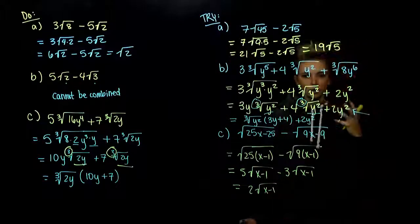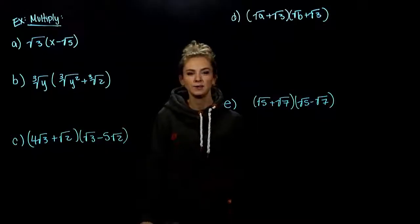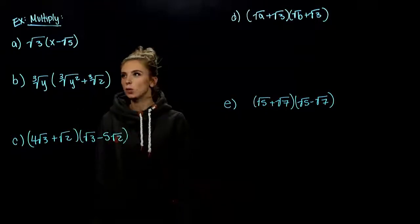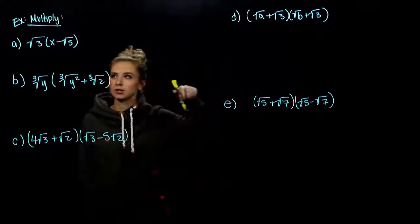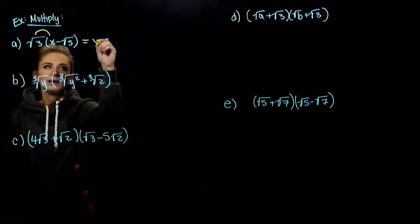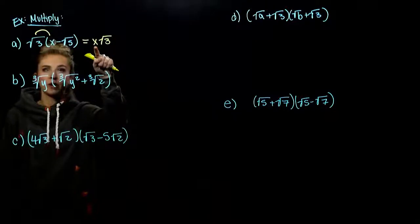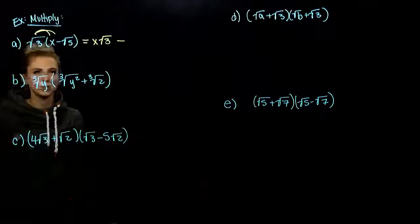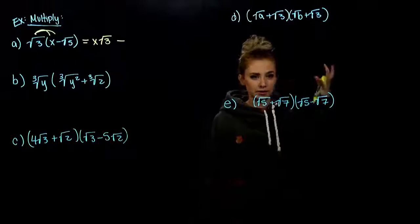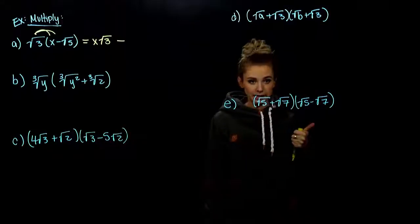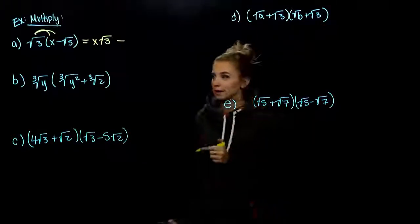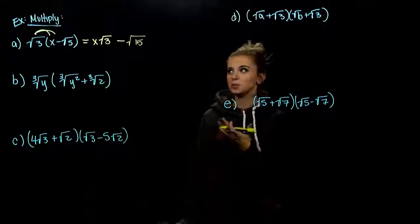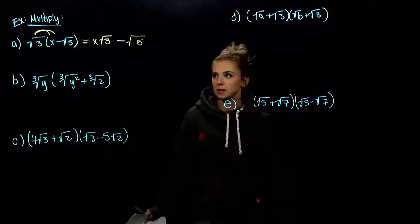Like radicands require the same radicand and the same index. Now for a few special cases of multiplication. In Part A, to get rid of the parentheses we distribute root 3 into each term. The first gives x times root 3 — we write the variable out front so it's clear it's not under the radical. Then we have negative square root 3 times square root 5. Same index, non-negative radicands, so we combine underneath: square root of 15. We can't simplify 15 any further.